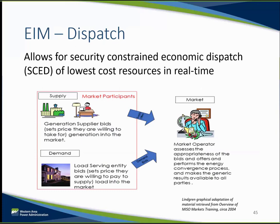This simple diagram demonstrates the interaction of the market participants and the market. With an EIM, the market operator is able to utilize geographic and resource diversity to optimize the dispatch of generation to serve the load in real time with the most economic unit dispatch within transmission system constraints. This means that if you are an entity with high cost resources, you will likely benefit by being able to access lower cost resources, and if you are an entity with lower cost resources, you will likely benefit from being able to run your resource at a higher capacity factor.